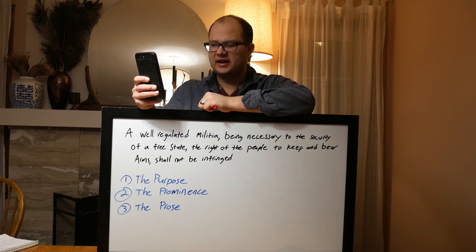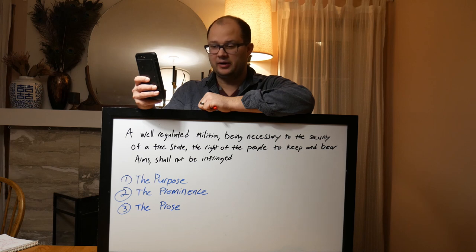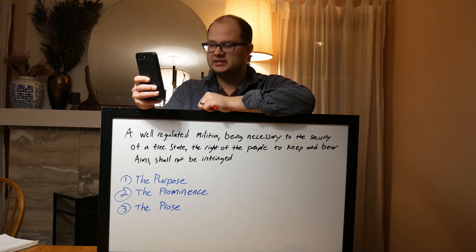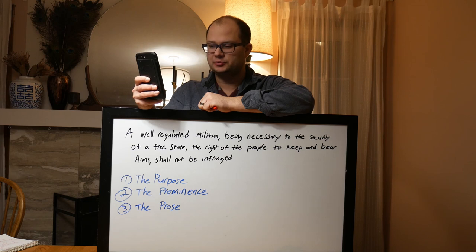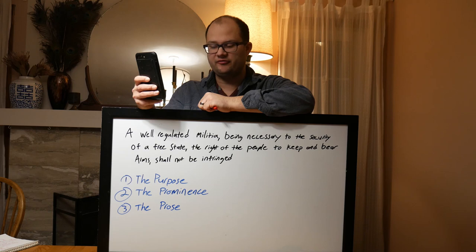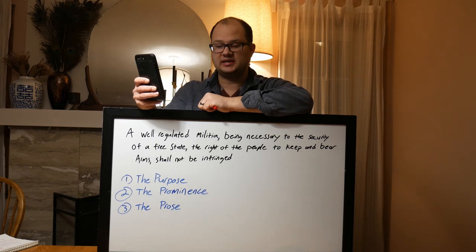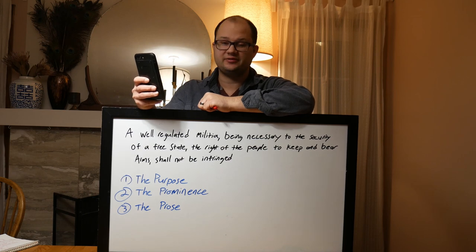Besides the advantage of being armed, which the Americans possess over the people of almost every other nation, the existence of a subordinate government to which the people are attached and by which the militia officers are appointed, forms a barrier against the enterprises of ambition more insurmountable than any which a simple government of any form can admit of. James Madison, Federalist Paper No. 46, January 29th, 1788.